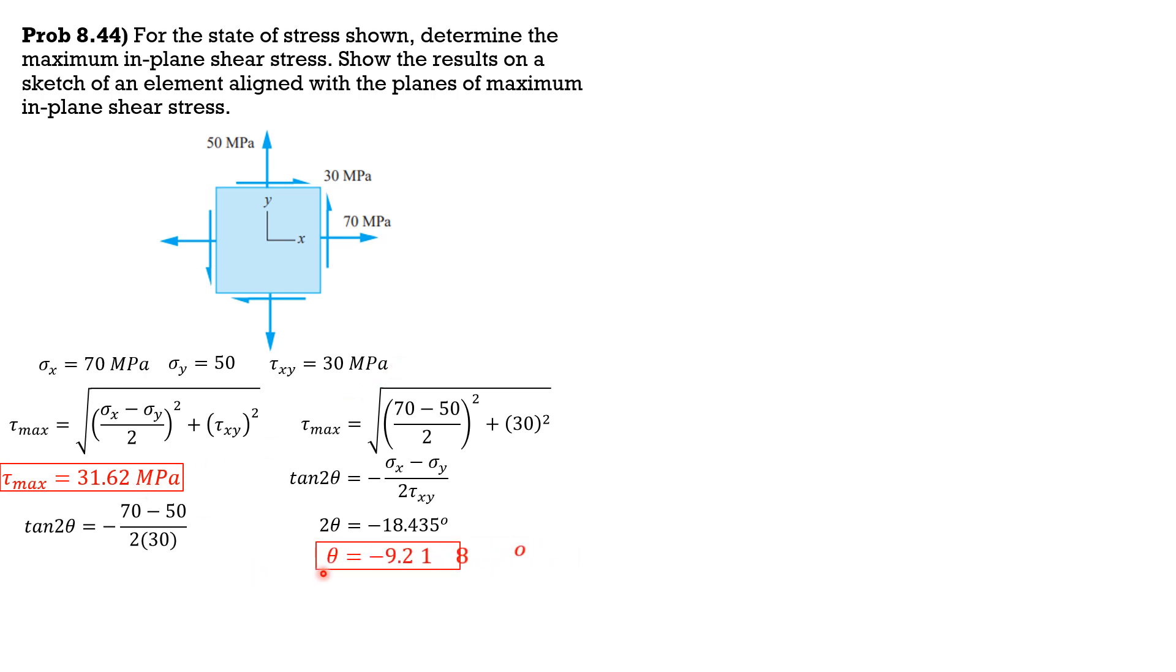For the sign, tau x prime y prime is equal to negative of quantity (sigma x minus sigma y over 2) sine 2 theta plus tau xy cosine 2 theta. So tau x prime y prime is negative of quantity (70 minus 50 over 2) sine of negative 18.435 degrees plus 30 cosine of negative 18.435 degrees. So tau x prime y prime equals positive 31.62, so it's positive.